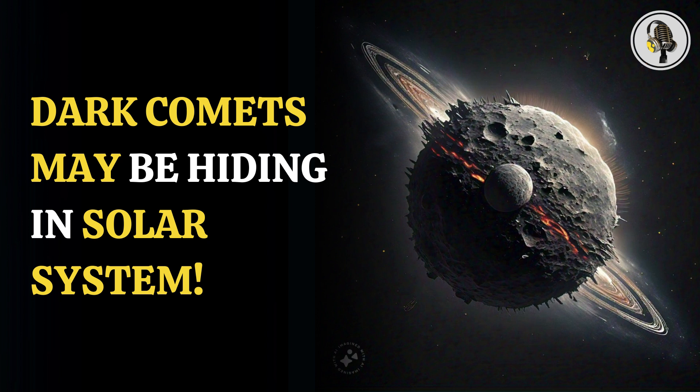A study says several near-Earth objects move around in our solar system, but not all of them are asteroids. Instead, up to 60% of them might be dark comets.